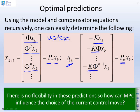Here's an interesting point. There is no flexibility in these predictions. They're fixed. The optimal predictions are known. You're then thinking, well, if the optimal predictions are known, there's no optimization left. I've already done it. So how can I influence the choice of the current control move?